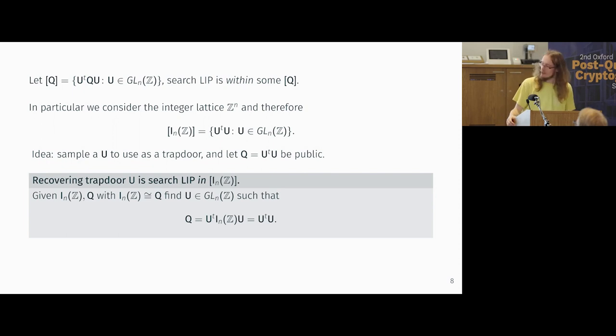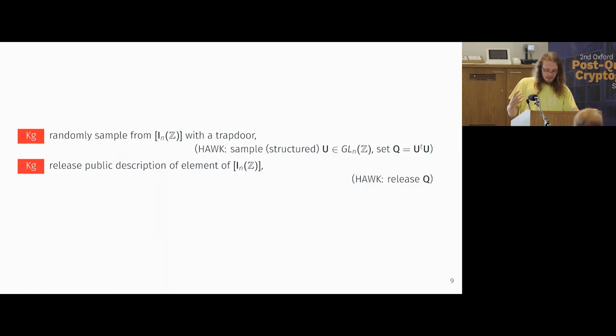So this is the problem we're going to try and build a signature scheme from. So we're going to have the square brackets represent the equivalence class of all isomorphic gram matrices. And notice that this search problem that I define at the bottom here is within such a class. And in particular, we want to use the integer lattice Z^n, so this class becomes quite simple. It just becomes unimodular matrices times unimodular matrices. And my idea is to replace the keygen by sampling some unimodular matrix. I haven't told you how. Having that as your trapdoor and letting this gram matrix be the public information. And I want to point out here that recovering this trapdoor U is then exactly this search lattice isomorphism problem.